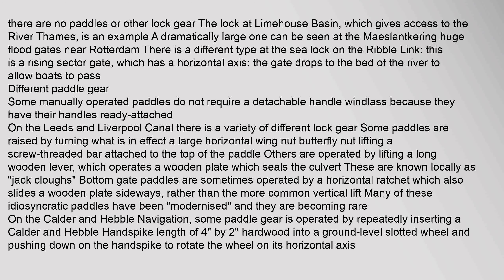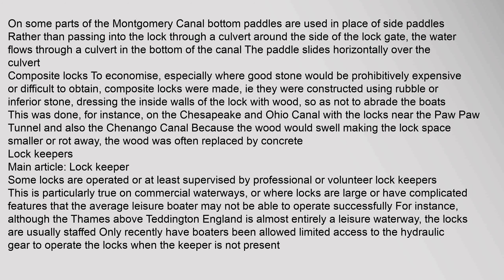Some manually operated paddles do not require a detachable windlass because they have handles already attached. On the Leeds and Liverpool Canal there is a variety of different lock gear: some paddles are raised by turning a large horizontal wing nut lifting a screw-threaded bar attached to the paddle; others are operated by lifting a long wooden lever, known locally as jack cluffs. Bottom gate paddles are sometimes operated by a horizontal ratchet which slides a wooden plate sideways rather than the more common vertical lift. On some parts of the Montgomery Canal, bottom paddles are used in place of side paddles, with water flowing through a culvert in the bottom of the canal.